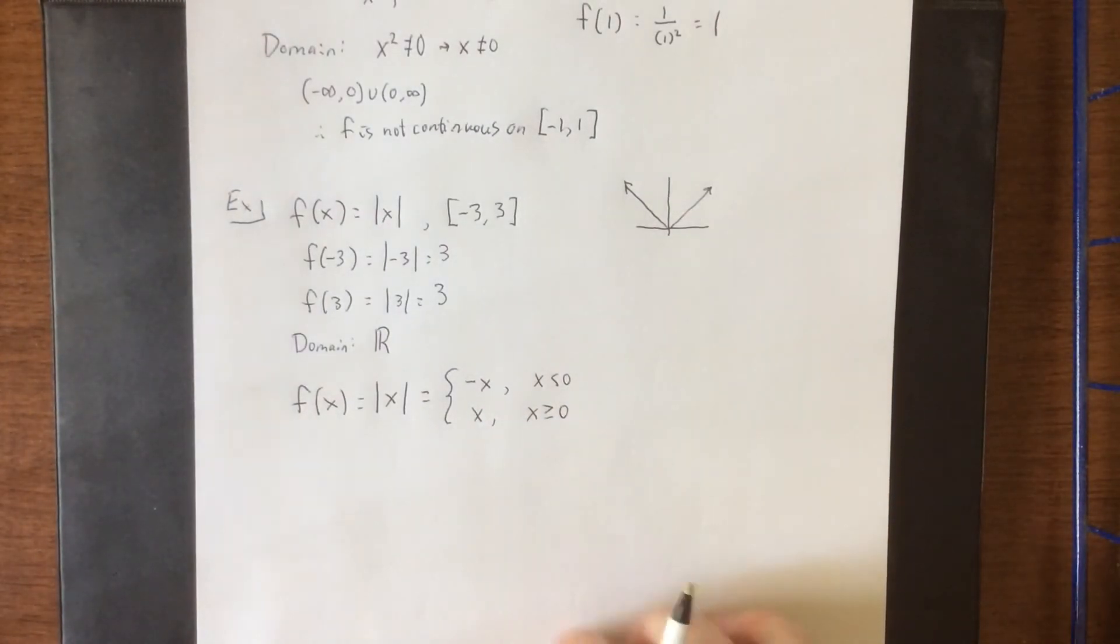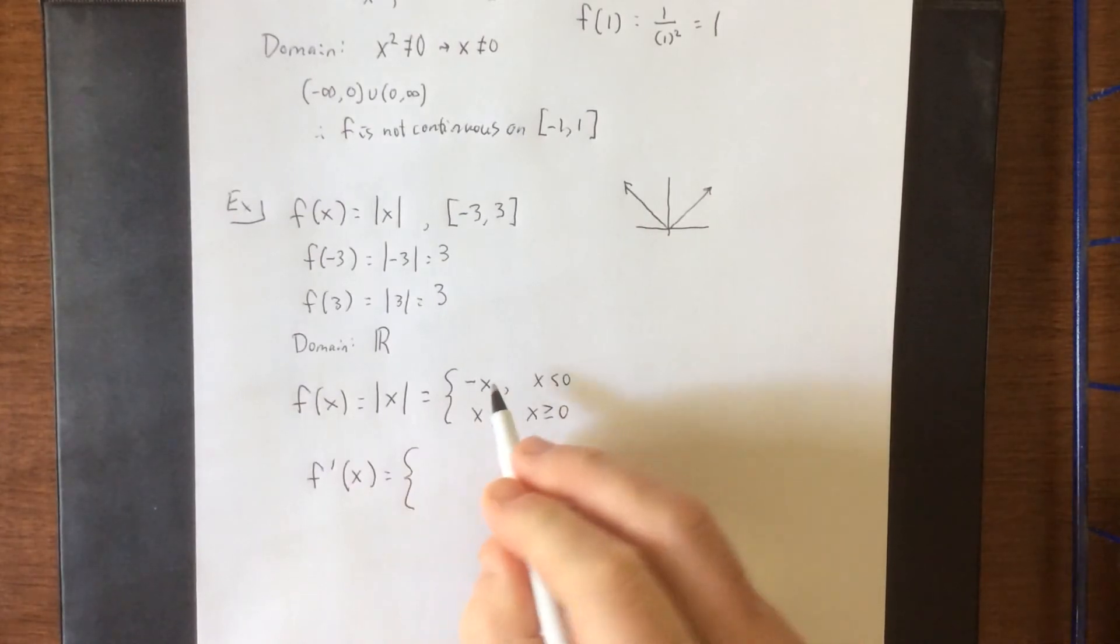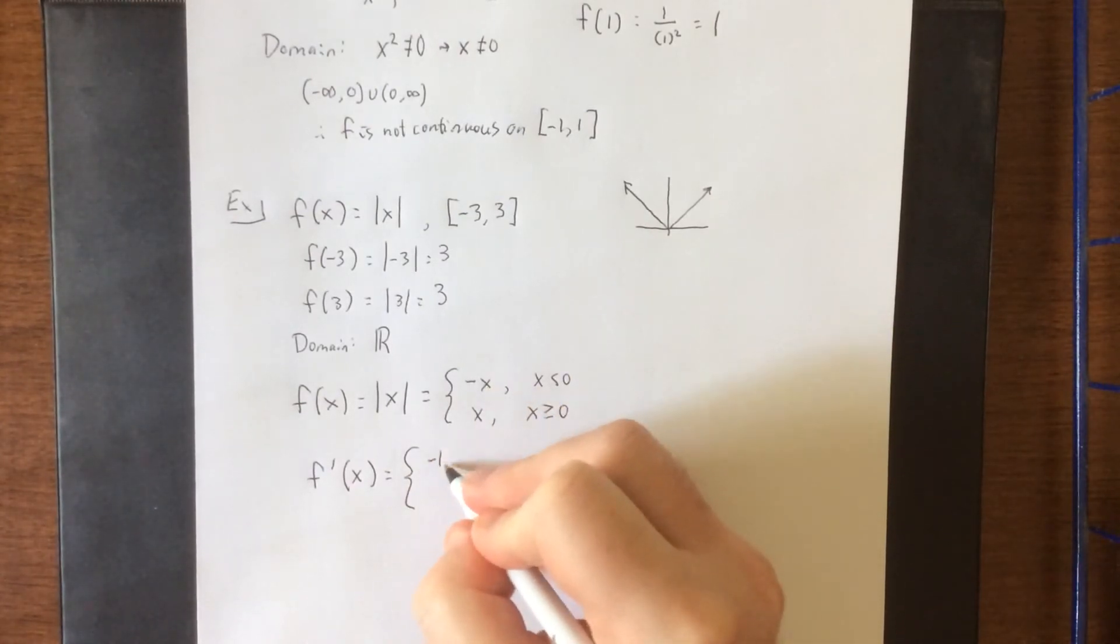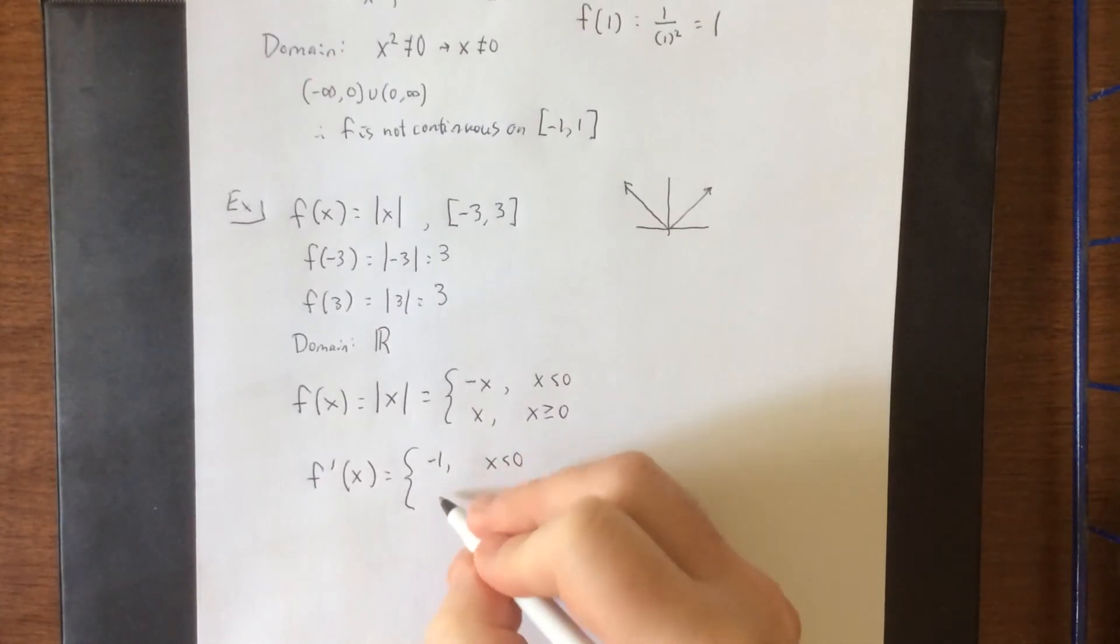Now if I were to differentiate this and use the piecewise defined definition of the derivative, it would look like the following. The derivative of negative x is equal to negative 1 as long as x is less than 0 and the derivative of x is equal to 1 as long as x is greater than 0.